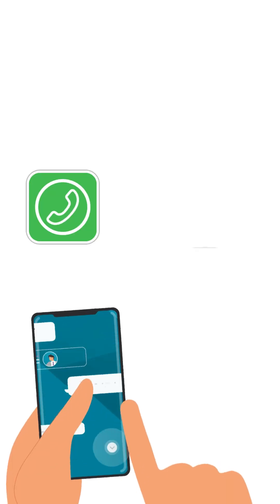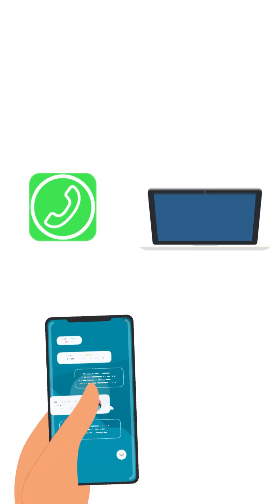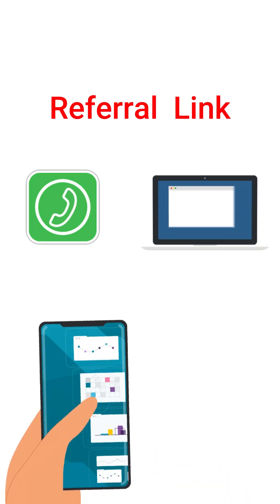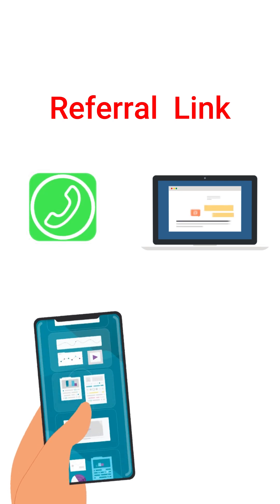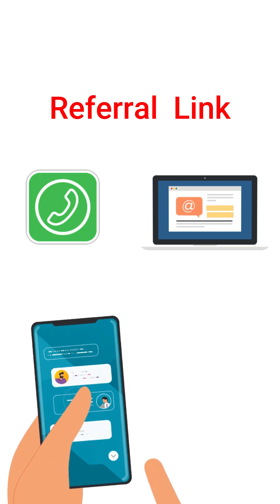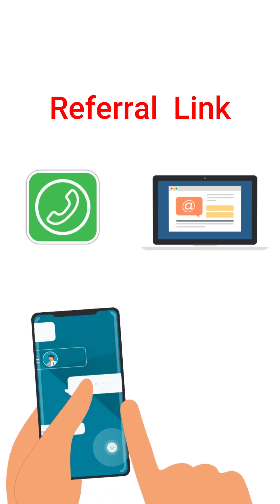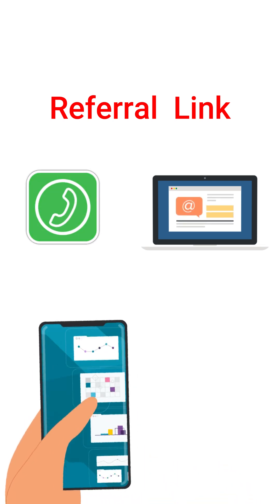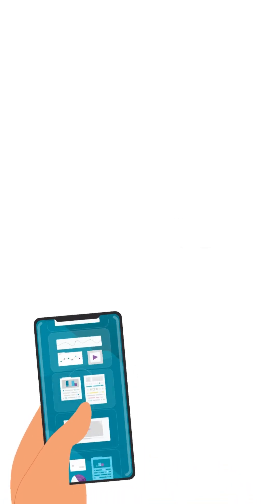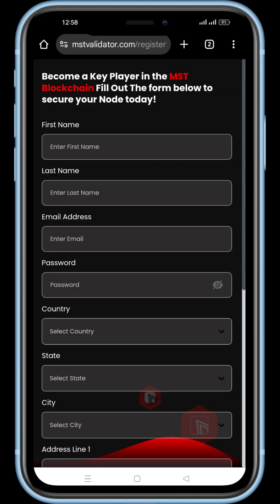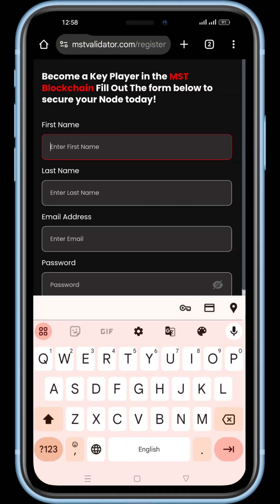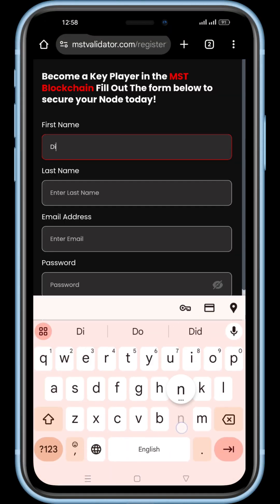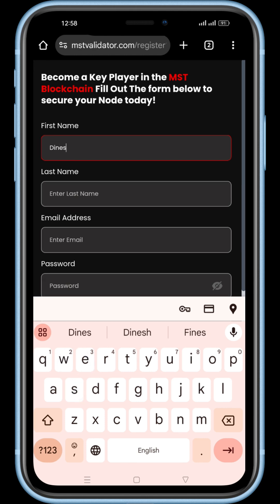Go to WhatsApp or your email and click on the referral link provided by your introducer. Once you click on the link, you will be directed to the page shown on the screen. Here you will see the KYC form.